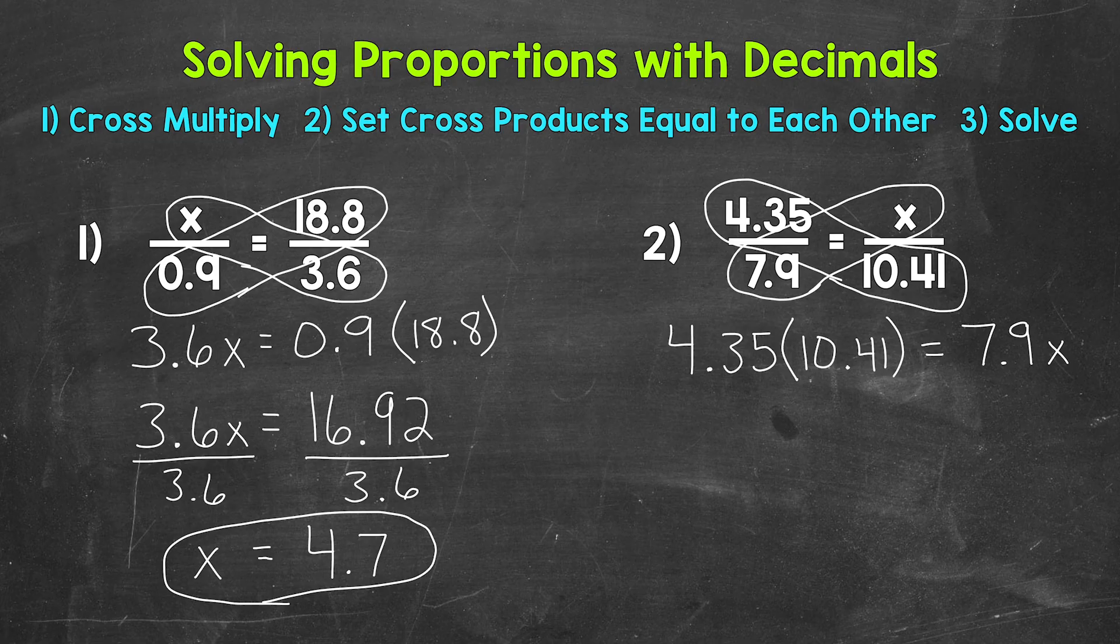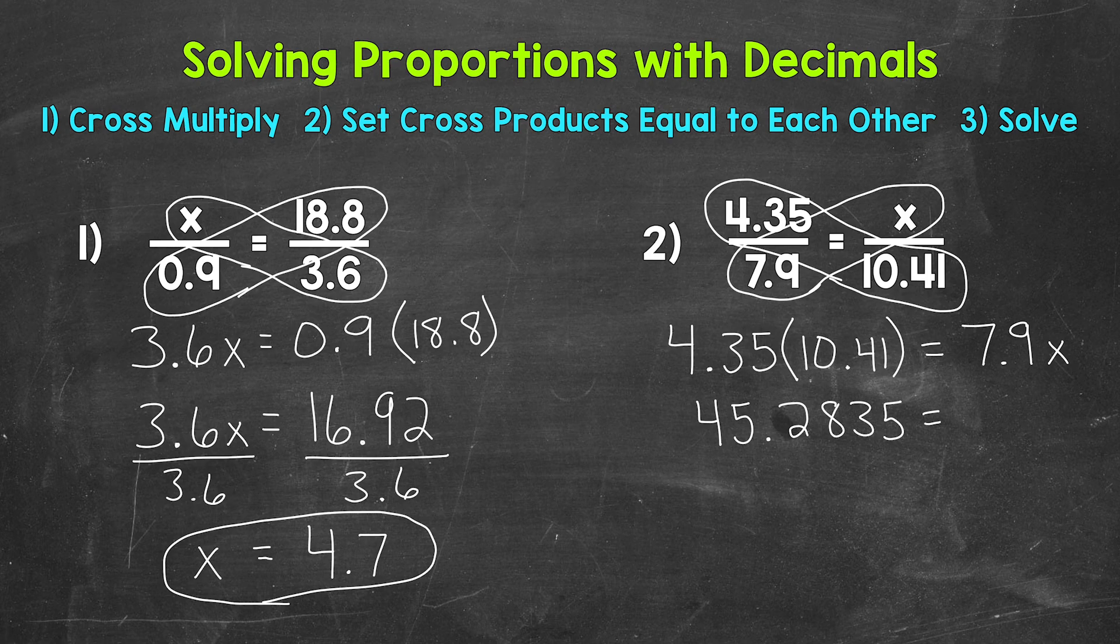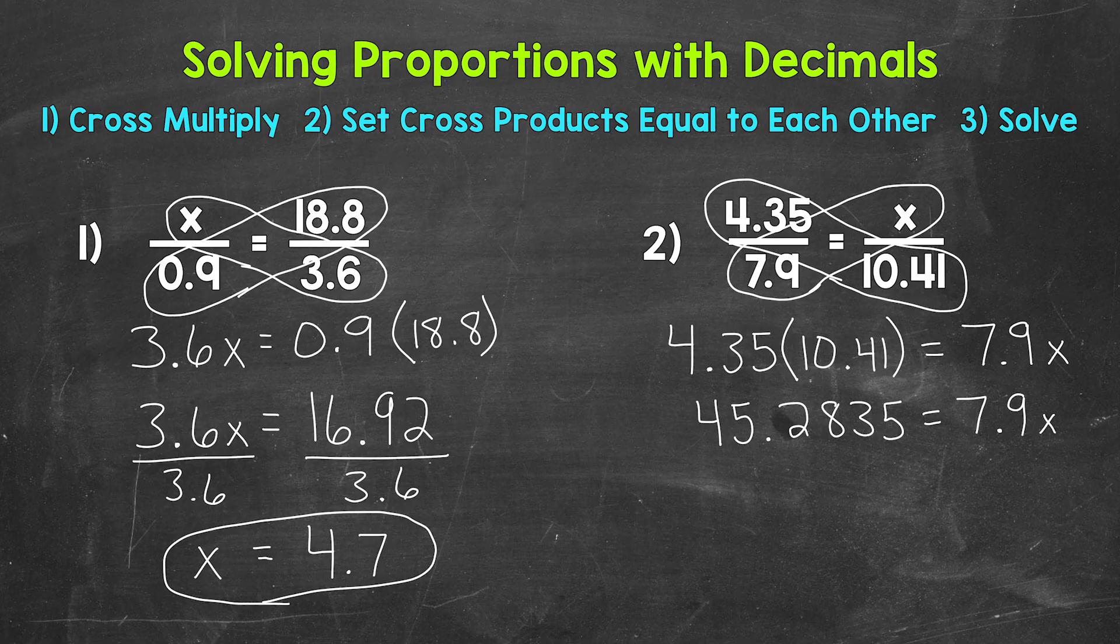Now we can multiply. So we have 4 and 35 hundredths times 10 and 41 hundredths. That gives us 45 and 2,835 ten thousandths. We can bring our equal sign and then 7 and 9 tenths x down as well.